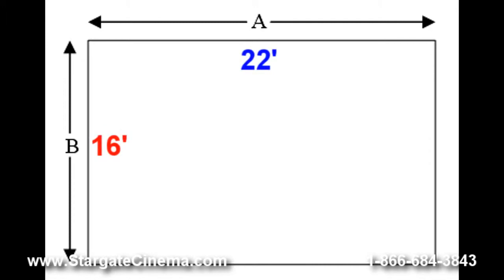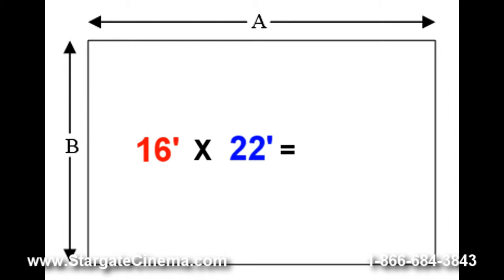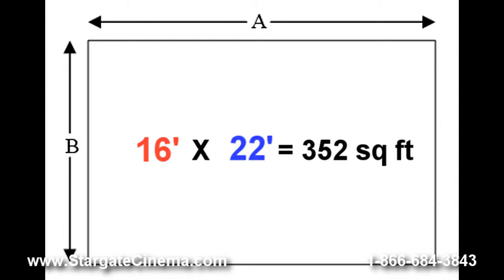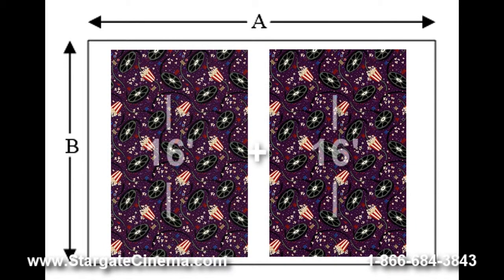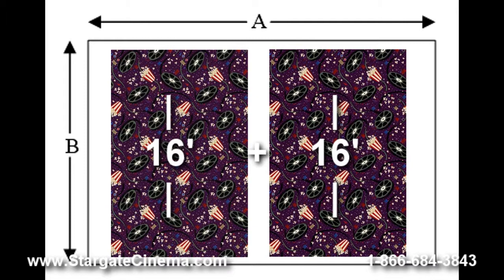In this example our theater room will be 16 feet by 22 feet. We calculate the total square footage the same way as the first example — simply multiply these two dimensions together: 16 times 22 is 352 square feet. We need to order enough carpet to do two runs of carpet along the shorter dimension of the room. In this case the shorter dimension is 16 feet, so 2 times 16 is 32.